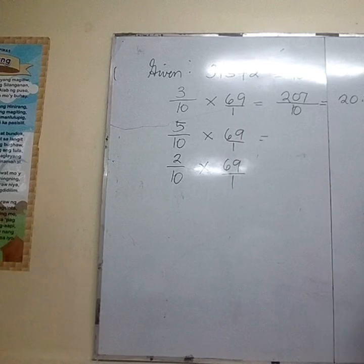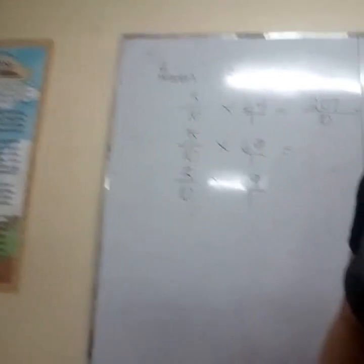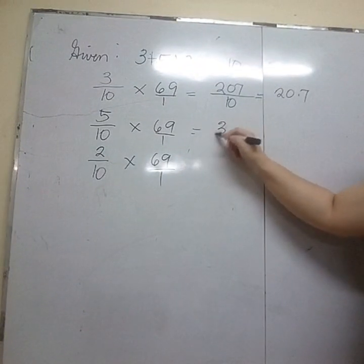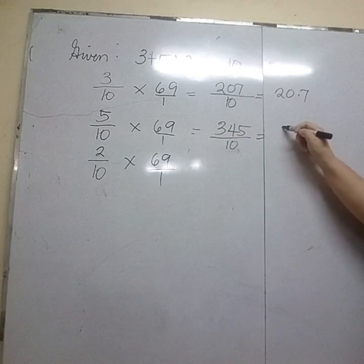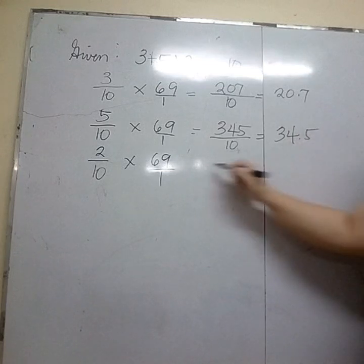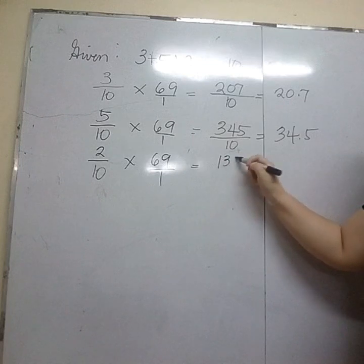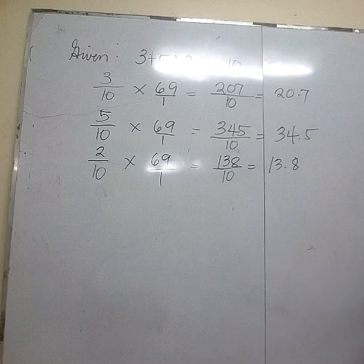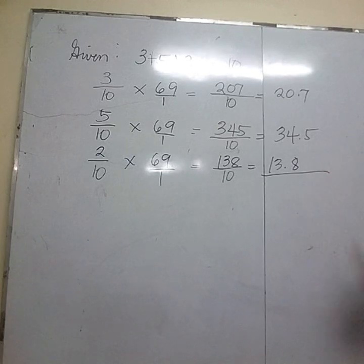Next: 5 times 69 is 345, divided by 10 is 34.5. Then 2 times 69 is 138, divided by 10 is 13.8. So let's add them up: 20.7, 34.5, and 13.8.